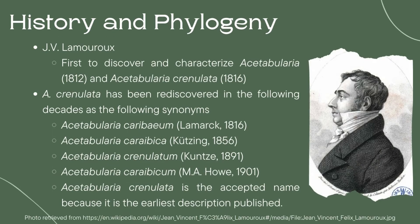Before we learn more about Acetabularia creniolata, it is important to learn the history of the species. The genus Acetabularia and the species Acetabularia creniolata were first discovered, characterized, and named by J.V. Lamoureux in 1812 and 1816, respectively. Acetabularia creniolata has since been rediscovered, with several synonyms coming up during the decades following his discovery: Acetabularia caribeum by Lamarck in 1816, Acetabularia caraibica by Kutzing in 1856, Acetabularia creniolatum by Kuntze in 1891, and Acetabularia caraibicum by M.A. Hau in 1901. However, following the rules of taxonomy, the earliest description of the species would be the one accepted today, which is Acetabularia creniolata by J.V. Lamoureux.